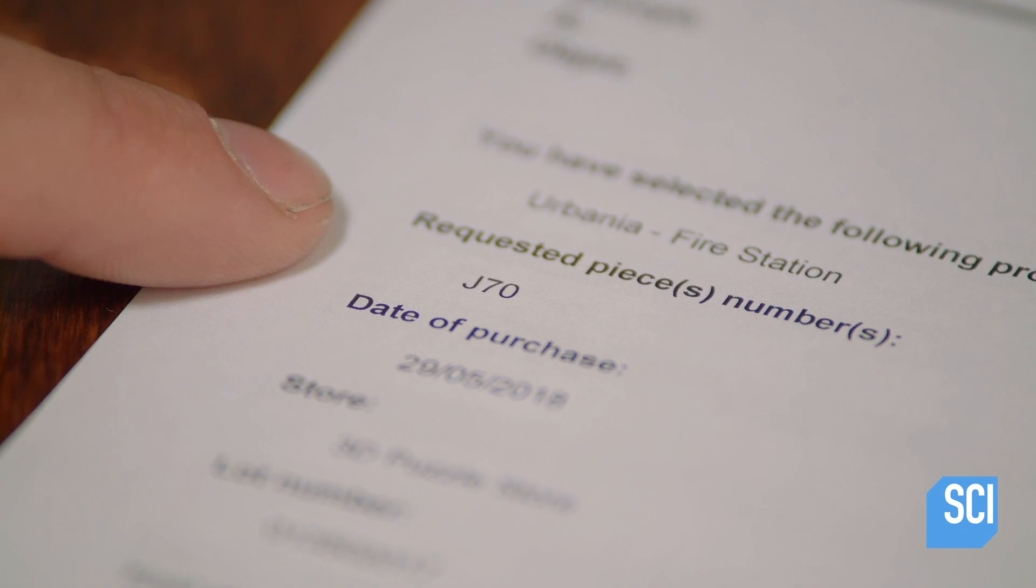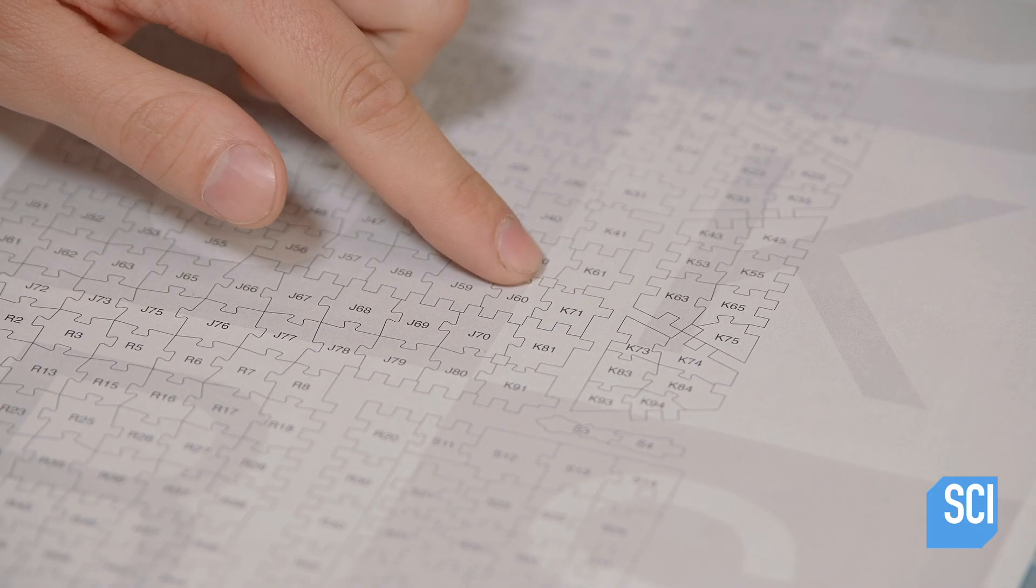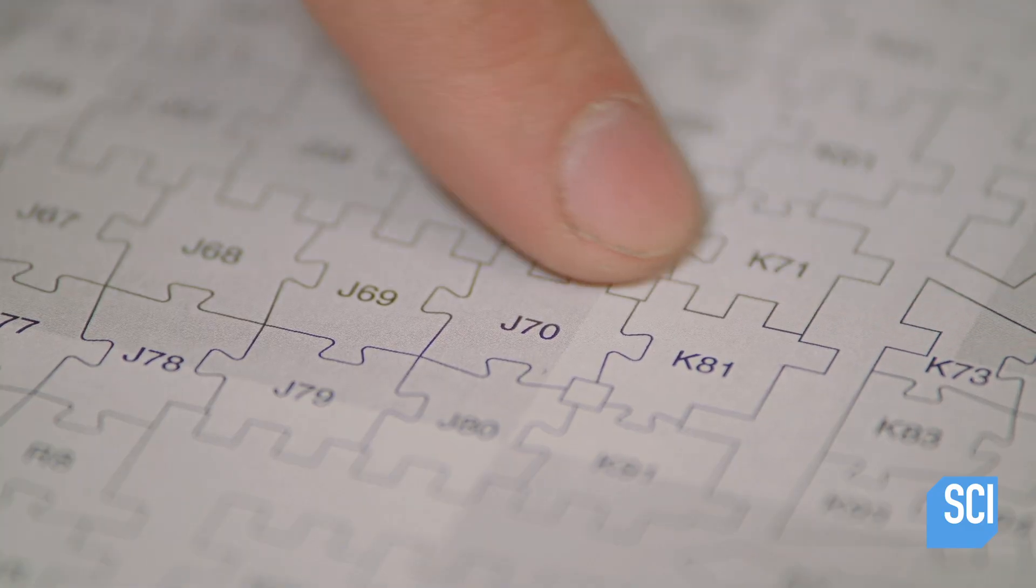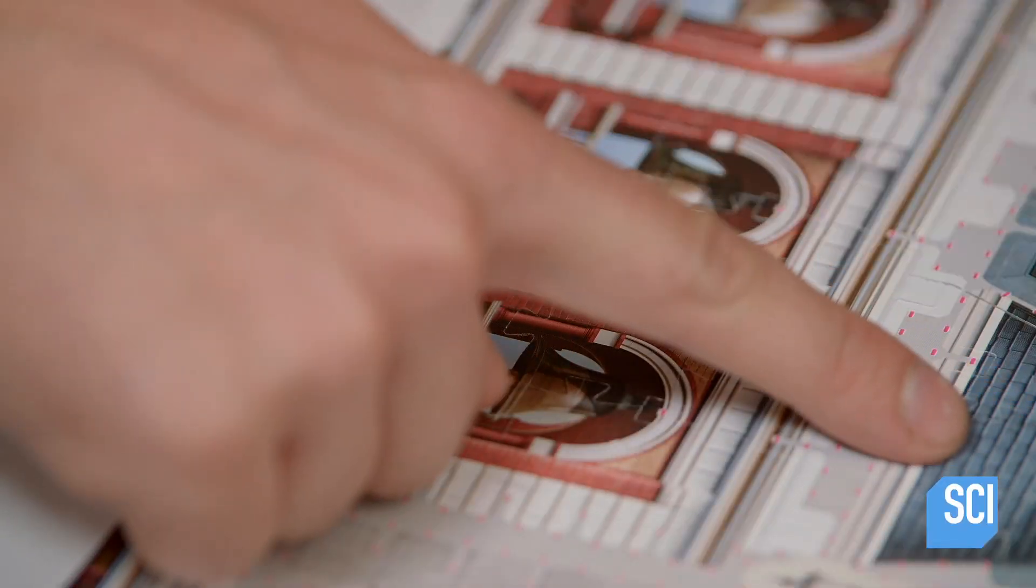If you happen to lose a puzzle piece, you can go to the company's website to trace the number of your missing piece, then order a new piece online. The company will mail it to you so that you can complete your puzzle.